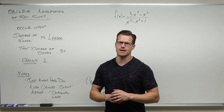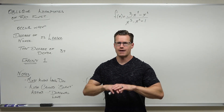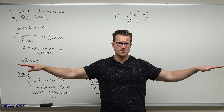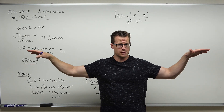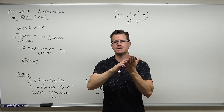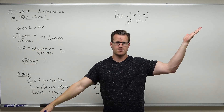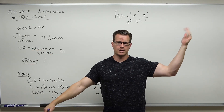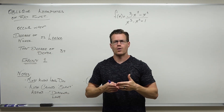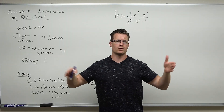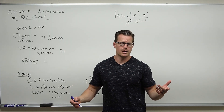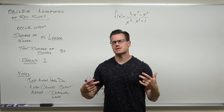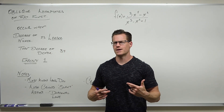There are really only three cases. You have a horizontal asymptote, either at zero or a constant. You have a diagonal line asymptote — called an oblique or a slant — or you have just regular old end behavior. We're kind of in the second phase of this.